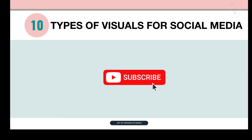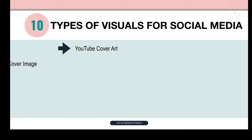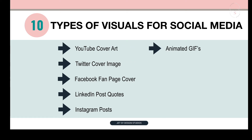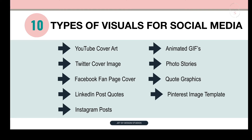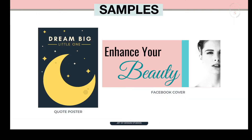Here are 10 types of visuals you can create with Canva for social media networks: a YouTube cover art, a Twitter cover image, Facebook fan page cover, LinkedIn posts, Instagram posts, animated GIFs, photo series, quote graphics, a Pinterest image template, and quick tip graphics. And here are some examples — a quote poster and a Facebook cover.